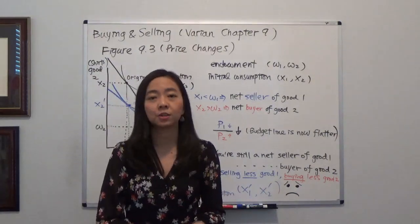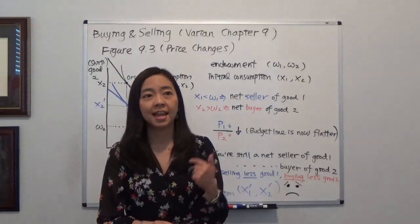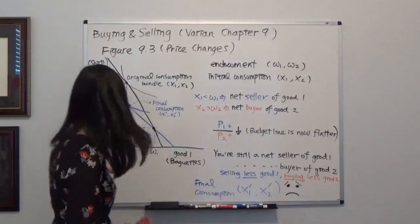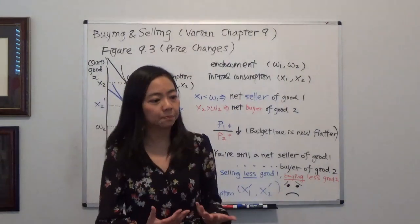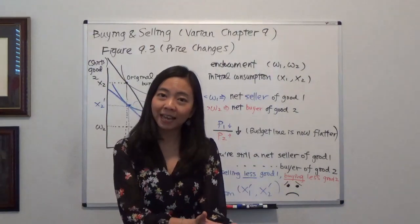You are hoping that you can sell your baguettes and buy some more t-shirts because you don't have a lot of t-shirts, as you can see. Because you're going to sell your baguettes, you will hope that the price of baguettes will be higher.